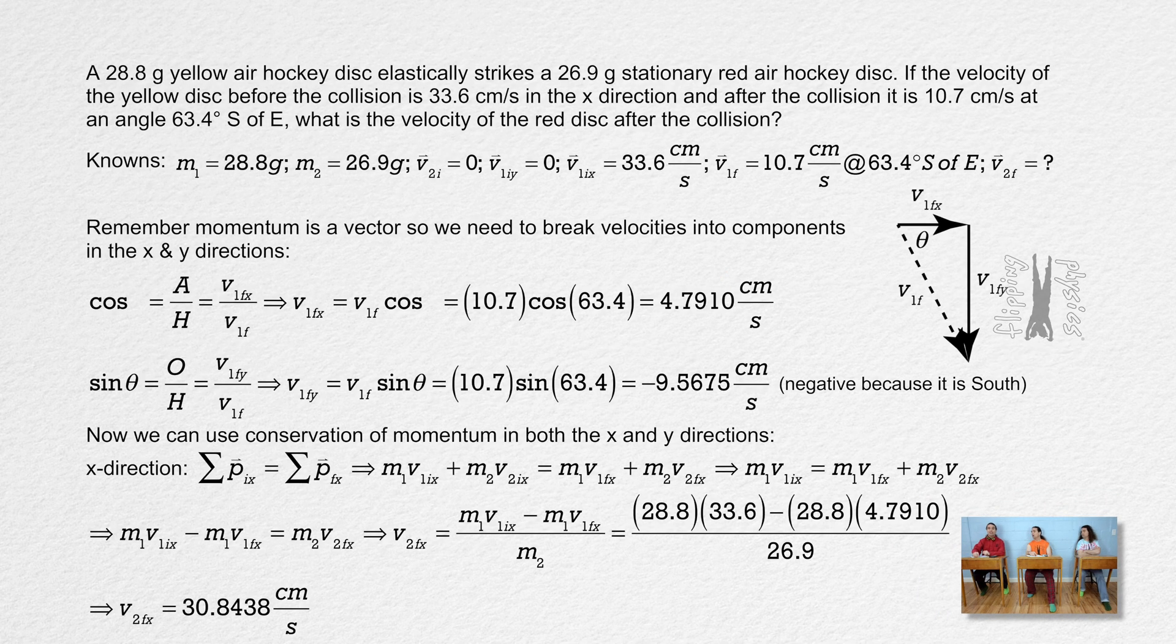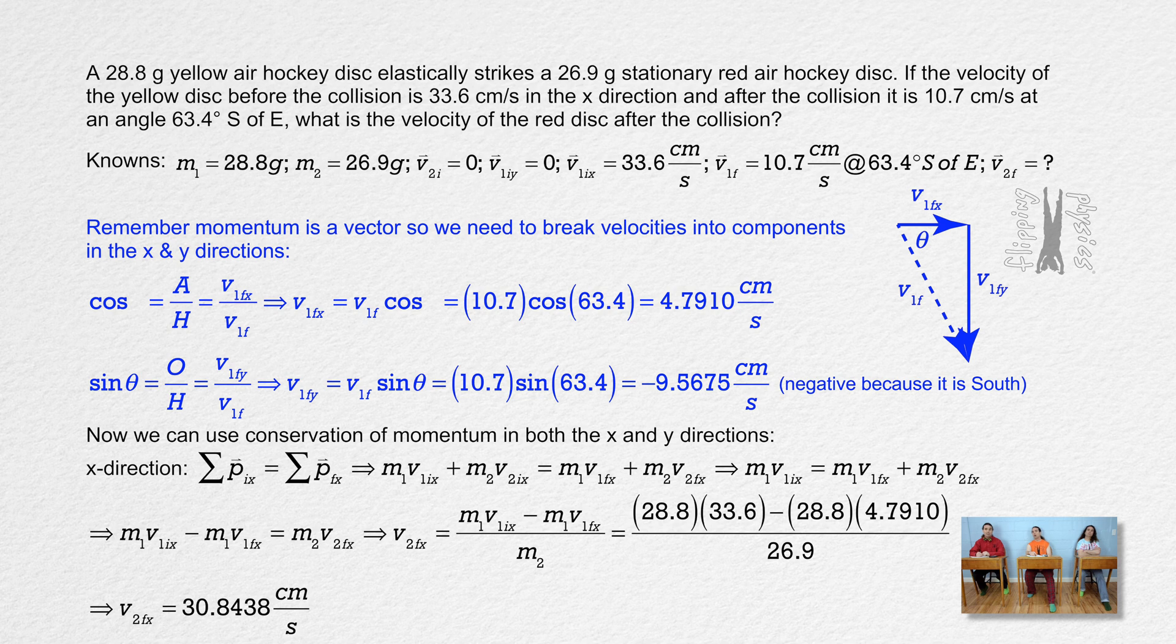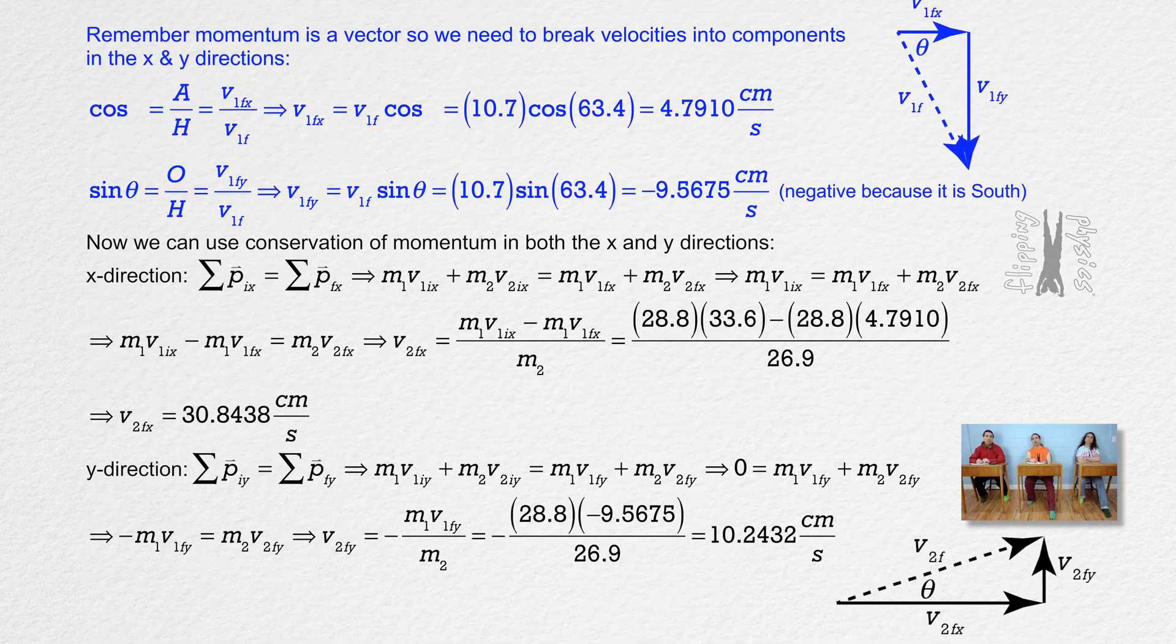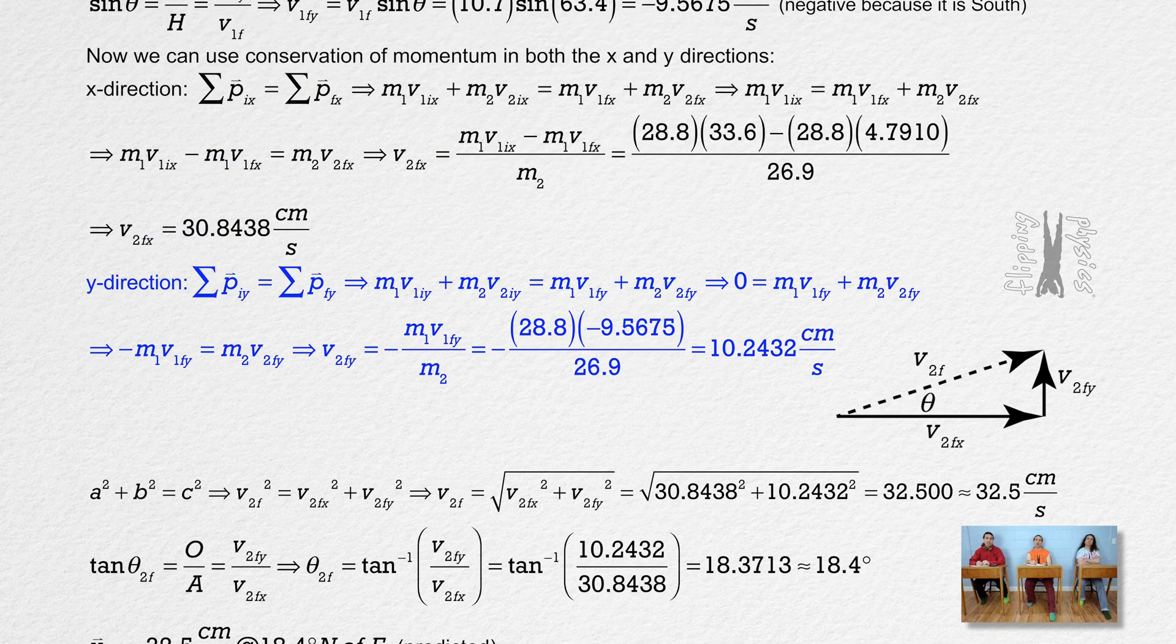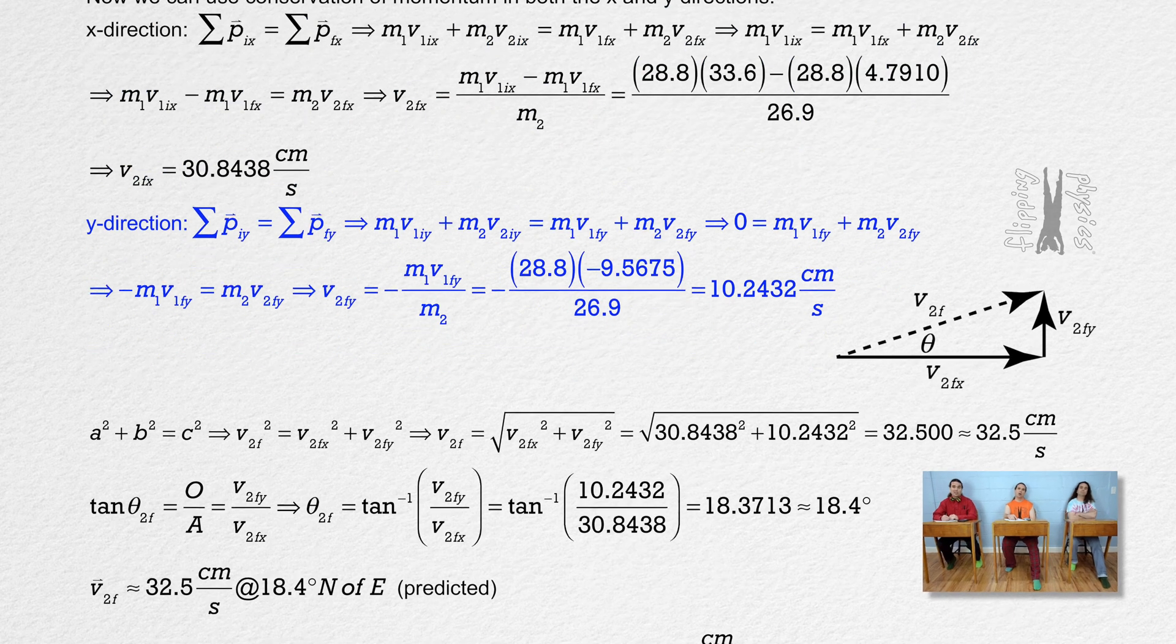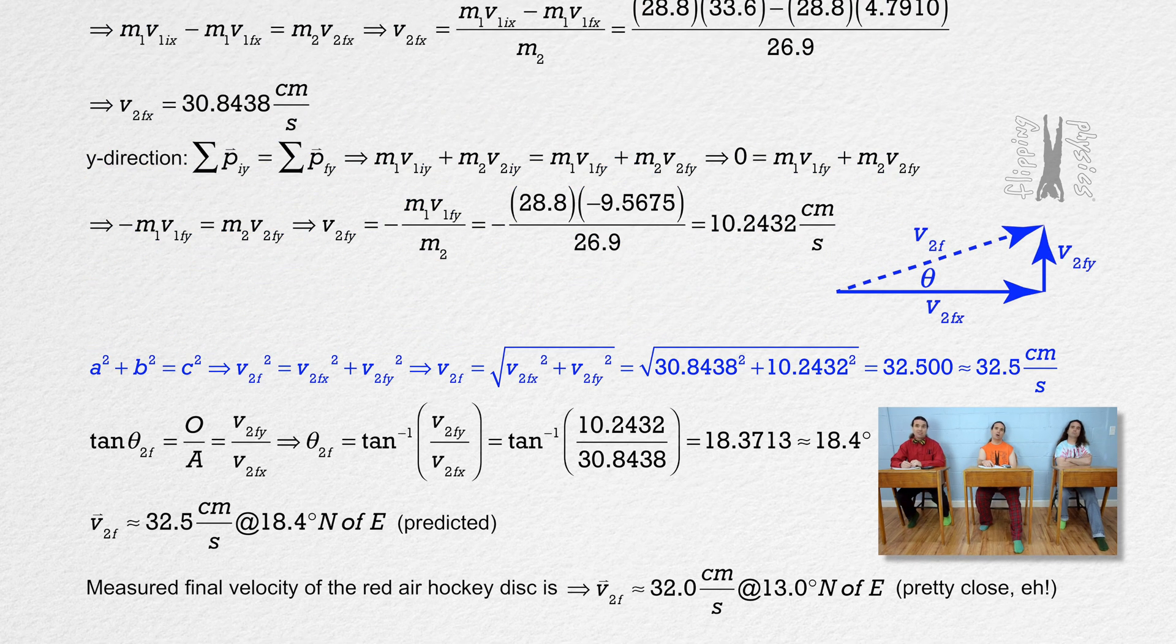Oh, right. Without unit vectors, we had to start by breaking the final velocity of disk one into components. Then we had to do conservation of momentum in the x direction, then conservation of momentum in the y direction. Then we had to use the Pythagorean theorem to solve for the magnitude of the final velocity of disk two, and then use tangent theta to solve for the direction of the final velocity of disk two. Unit vectors did make this a lot easier.